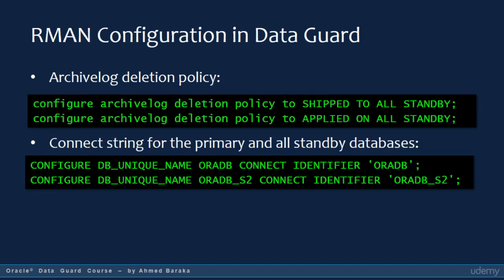When you configure RMAN for a database in a Data Guard configuration, you are advised to consider the following. First, you have to enable the archive log deletion policy — you don't want archived redo log files to accumulate in the database forever. For a primary database, you can set a policy to delete all the redo that has been shipped to all the standby databases. For a standby database, you can set a policy that will delete all the redo that has been applied.